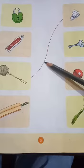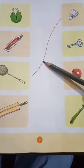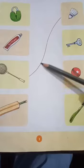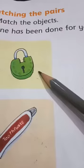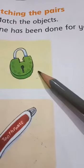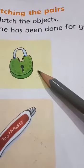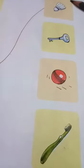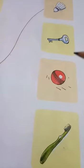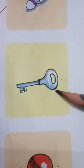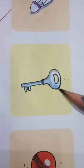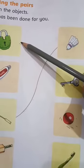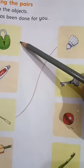Today we are going to match one object with another. One has been done for you. The name of this object is Lock. Find out the pair of Lock. Key is used to open the lock. Let's match lock with key.